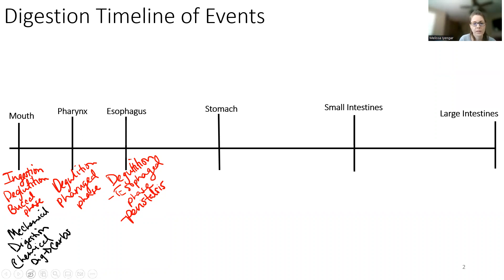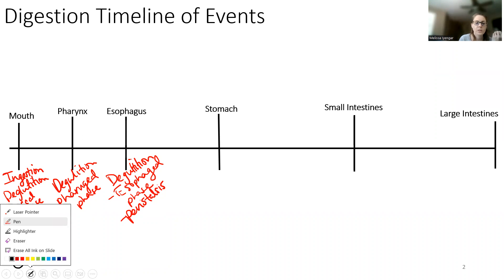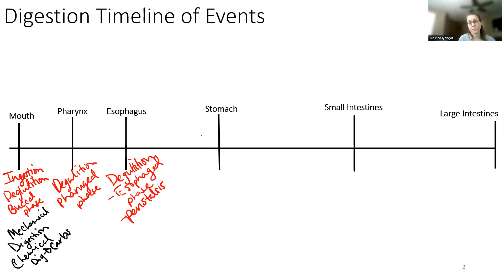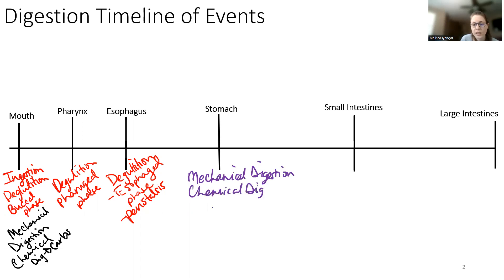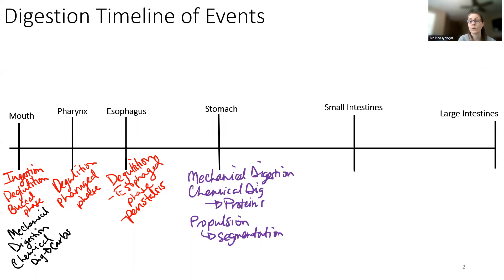The next part is the stomach, and the stomach is also going to do some of these things too. So what does the stomach do? The stomach has a couple of different functions. One is mechanical digestion, and it does chemical digestion — in this case we're going to start to break proteins. We also have some propulsion here; the propulsion in the stomach is usually called segmentation. If your instructor talked about it, you have to know segmentation.